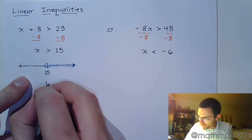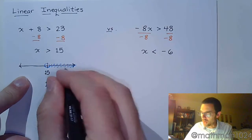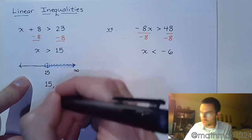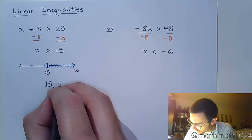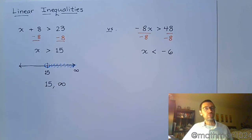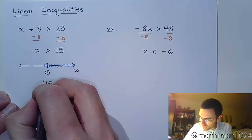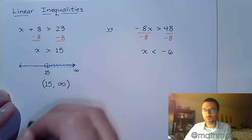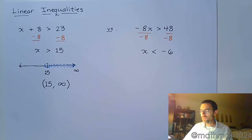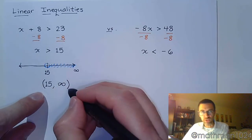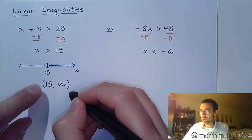Interval notation takes this section of the number line and writes it in a nice condensed way. You have to always go from left to right, least to greatest. So this is going from 15 out to the right, and this guy goes out to the right without stopping. So we use that infinity symbol. We're going from 15 to infinity. When you have interval notation, you're going to be using parentheses, unless you have an endpoint that is included, filled in, in which case you would use a bracket on that particular value. Here I'm not including 15, so I use parentheses, and I'm not including infinity, so I use parentheses on that as well.